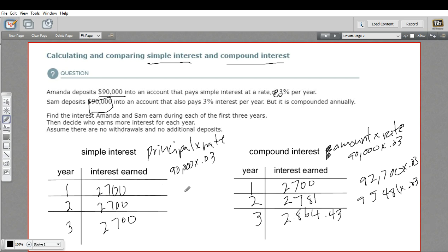So the interest is the same in the first year, but for any year after, it's going to be bigger for Sam than it is for Amanda. So if you're saving money and you can get compound interest rather than simple, that's definitely the way to go. So that's a little bit of work in calculating and comparing simple and compound interest.